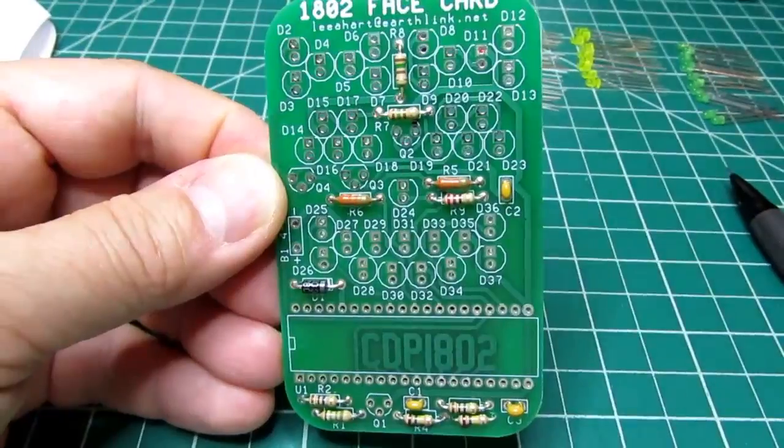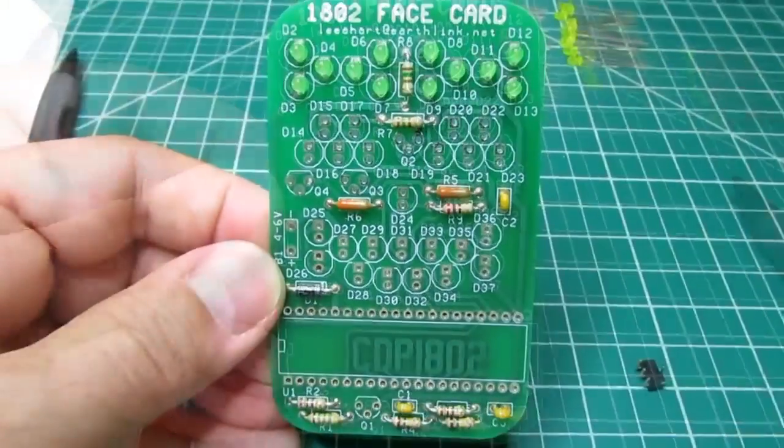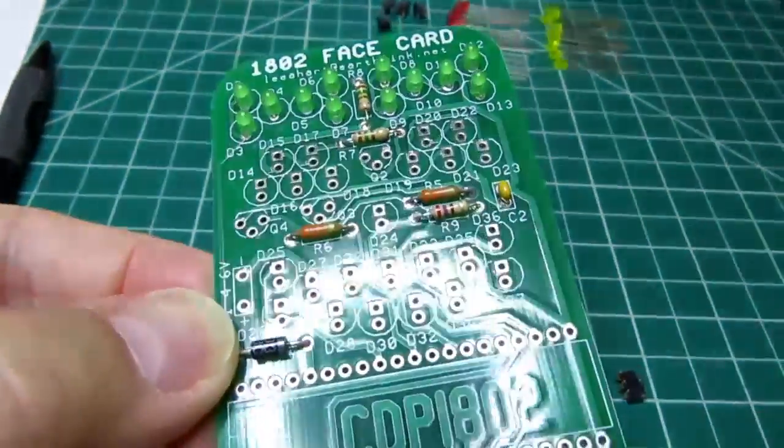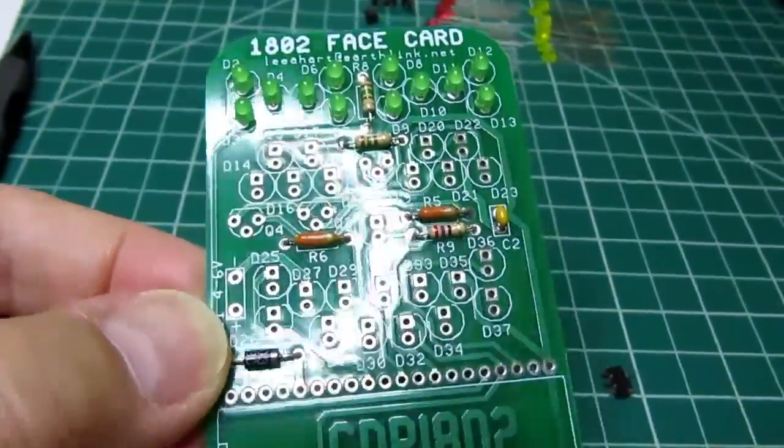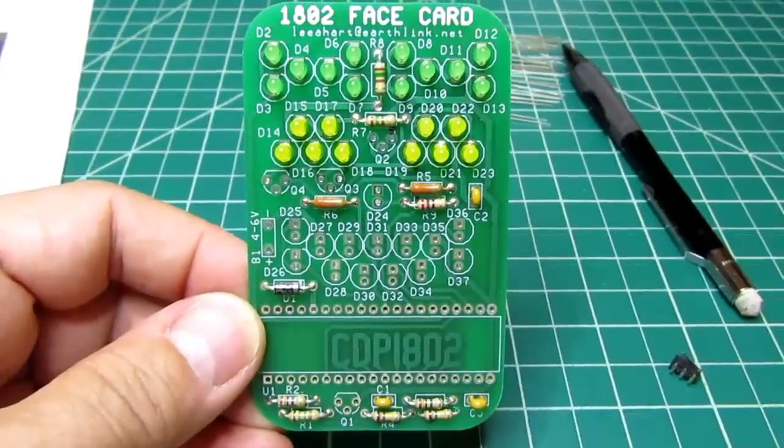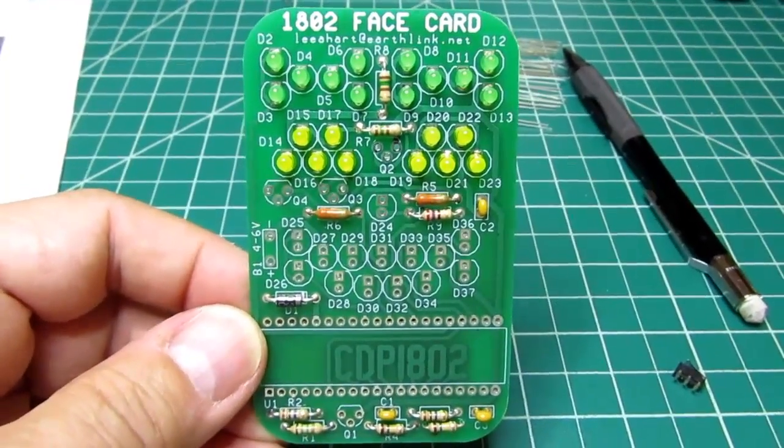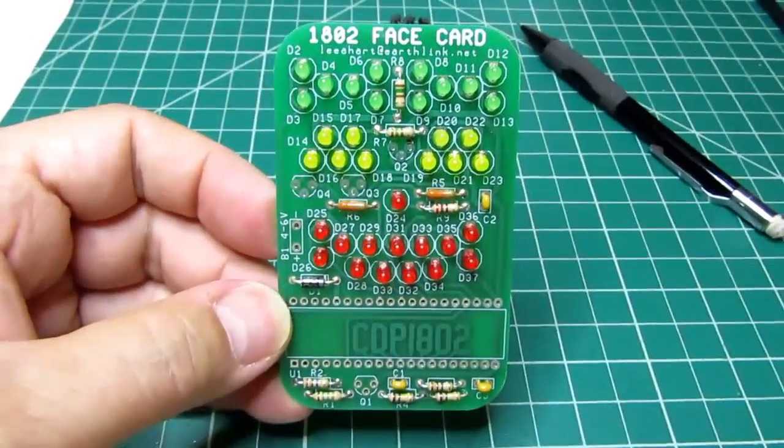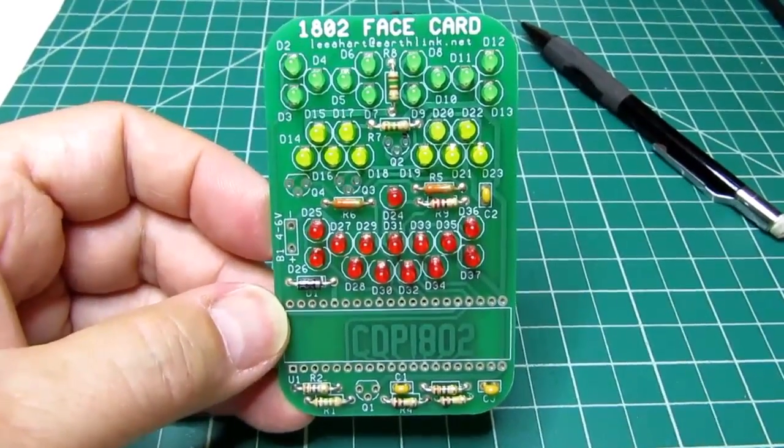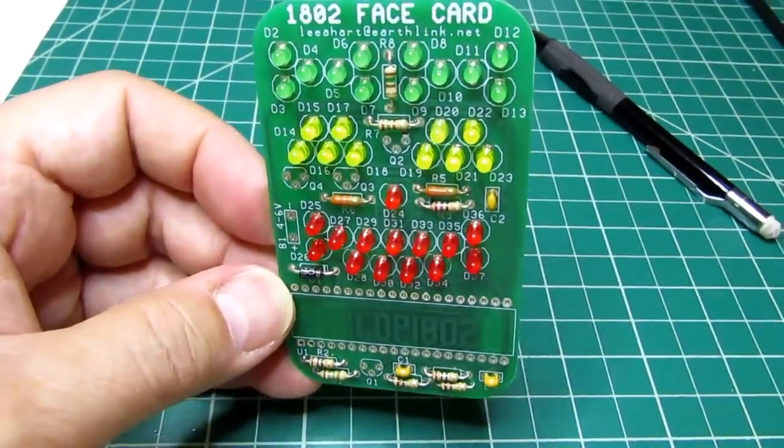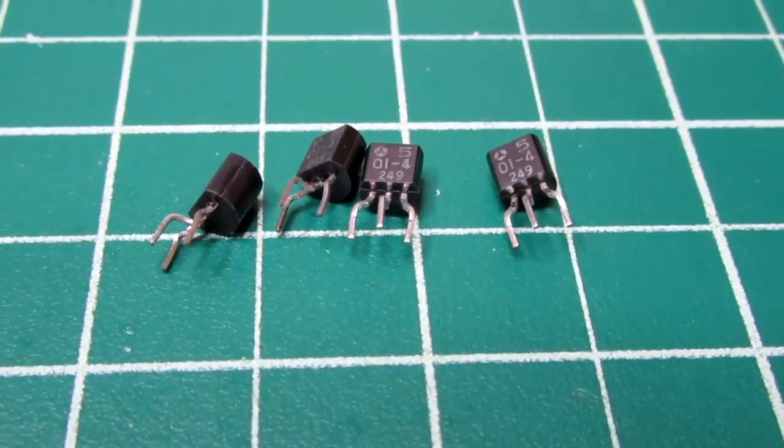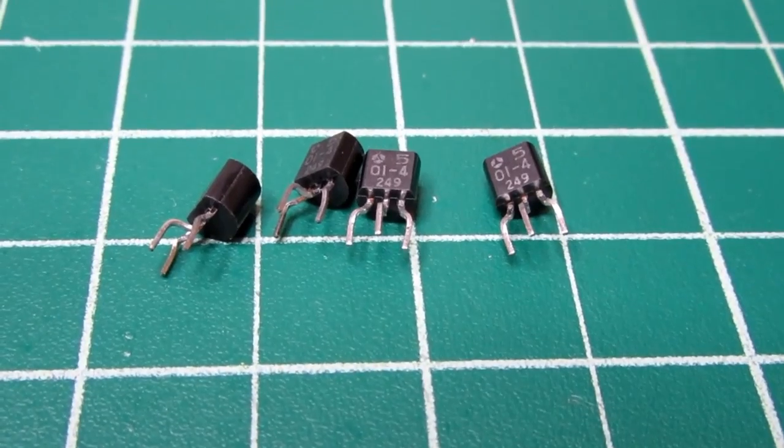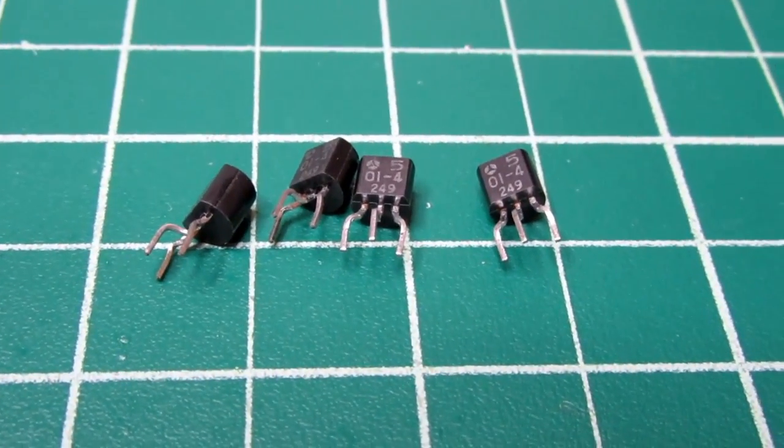Then I put in the three capacitors. Then the green LEDs are installed—these form the eyebrows of the face. Then the yellow LEDs are put in for the eyes, and then all the red LEDs for the mouth.